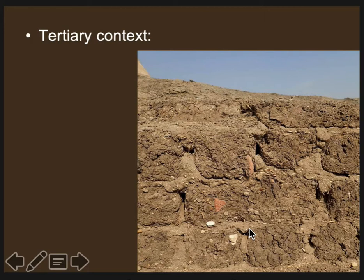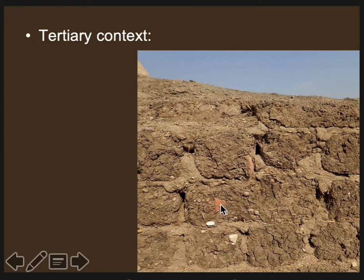Tertiary context is even one more step removed from that, and it's not very good context. Primary and secondary contexts are pretty good, but tertiary is not so good. An example of tertiary context would be artifacts found inside of mud bricks themselves. To make these mud bricks, people dug into earlier deposits that had artifacts in them. The artifacts in these bricks are not associated with the building, because they actually come from earlier deposits. So you couldn't date the house based on the artifacts in the brick. Another example would be a river or rain washing archaeological sediments downstream — that would also be tertiary context, because they're disturbed and removed from where people threw stuff away.